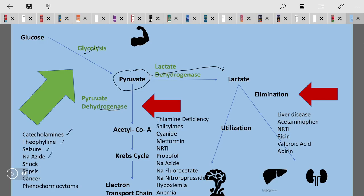The drugs include catecholamines, theophylline, and in the presence of seizure, sodium azide, and in the presence of shock, sepsis, cancer, and pheochromocytoma. In these conditions, glycolysis will be increased, leading to increased pyruvate levels which will saturate the pyruvate dehydrogenase and yield more lactate. So in these conditions we will see lactic acidosis.